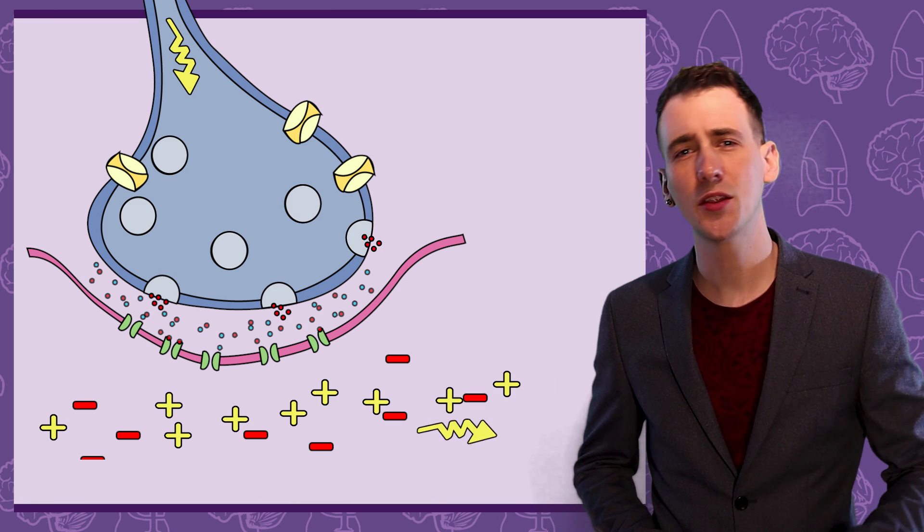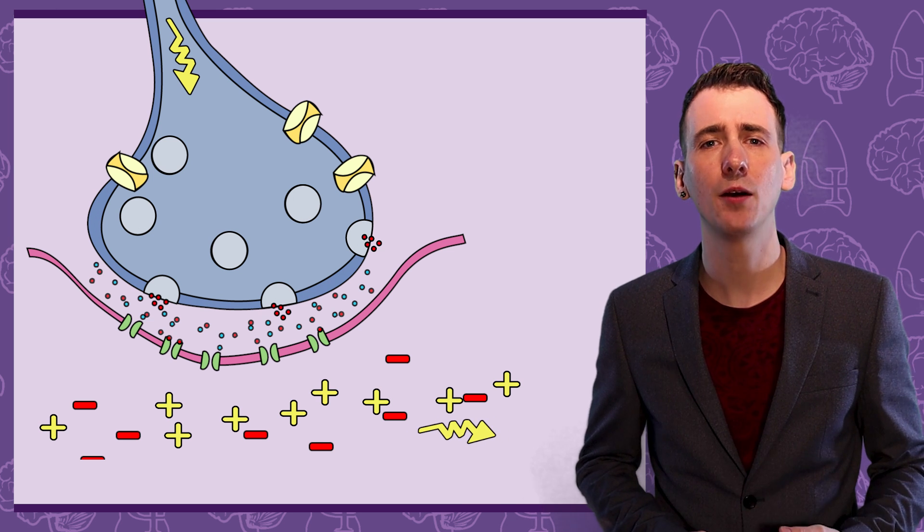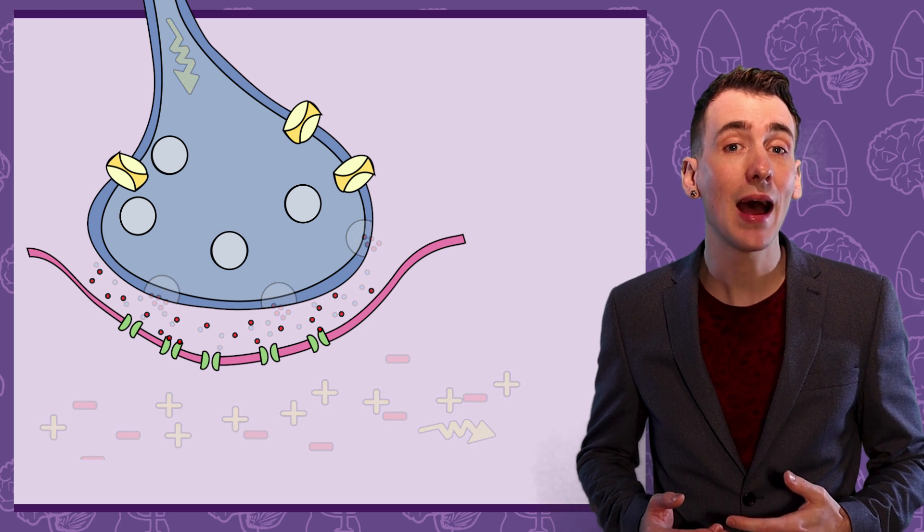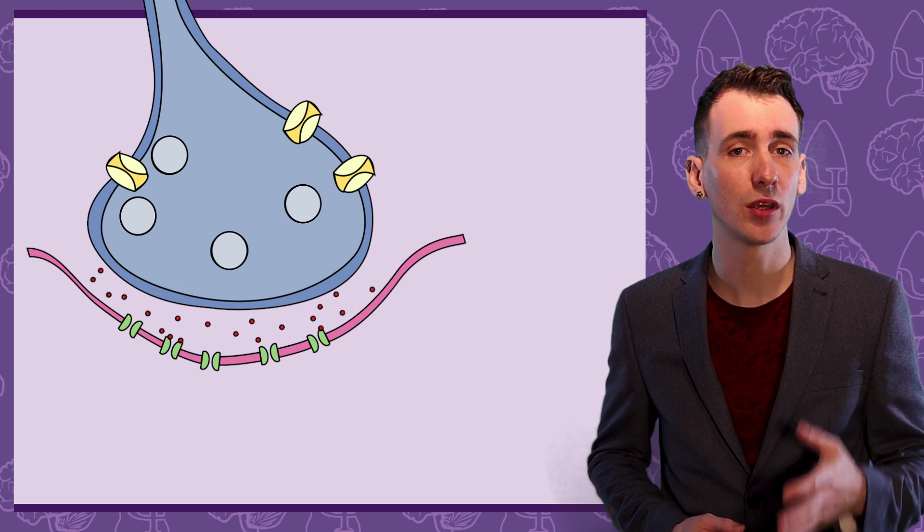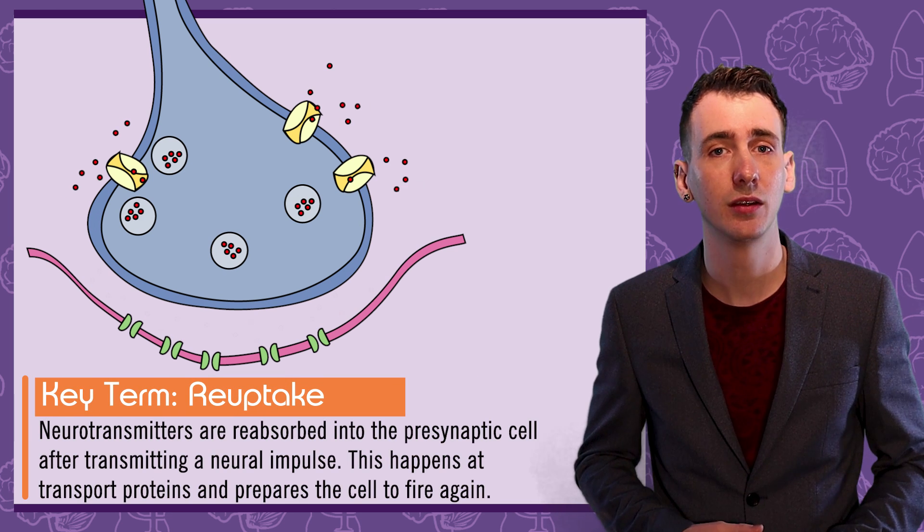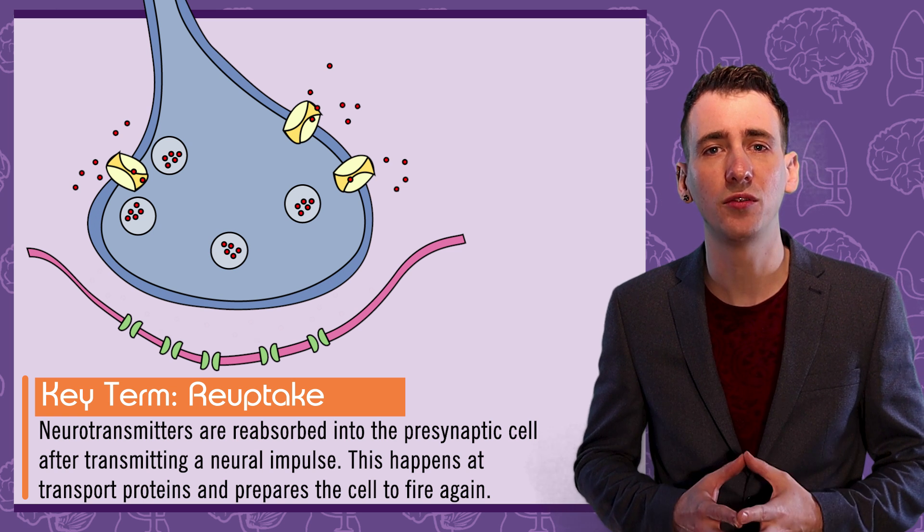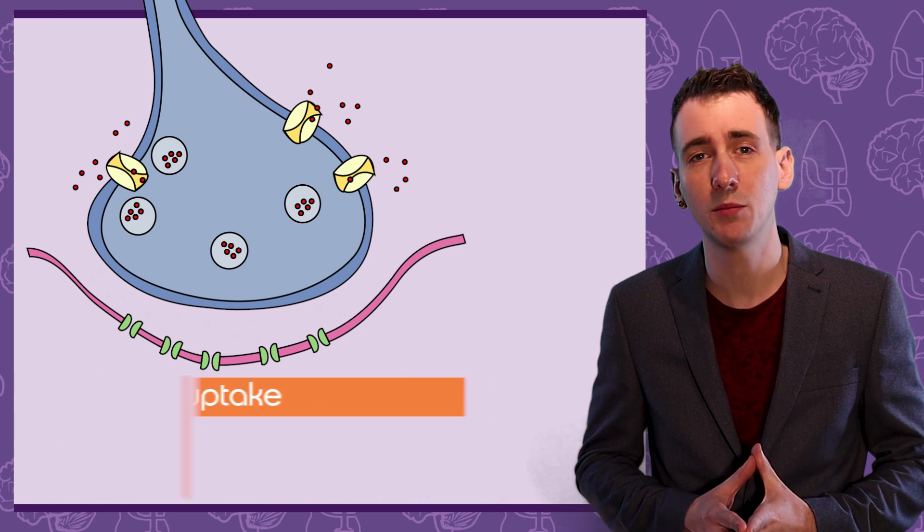Next. Now that neurotransmitters have been detected by the receptors, they detach. Some are broken down, and some are recycled, even back into the presynaptic cell, in a process called reuptake. This resets the cell, ready for the next fire. To give you an idea of how fast this process is, a typical neuron will fire between 5 and 50 times a second.